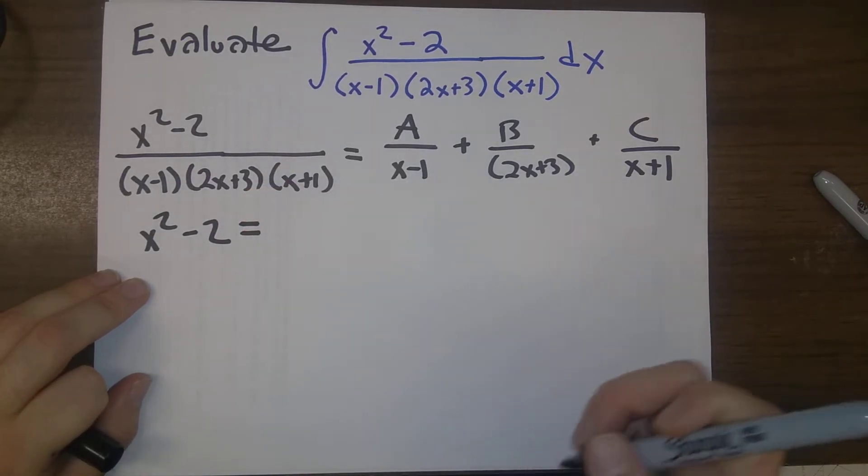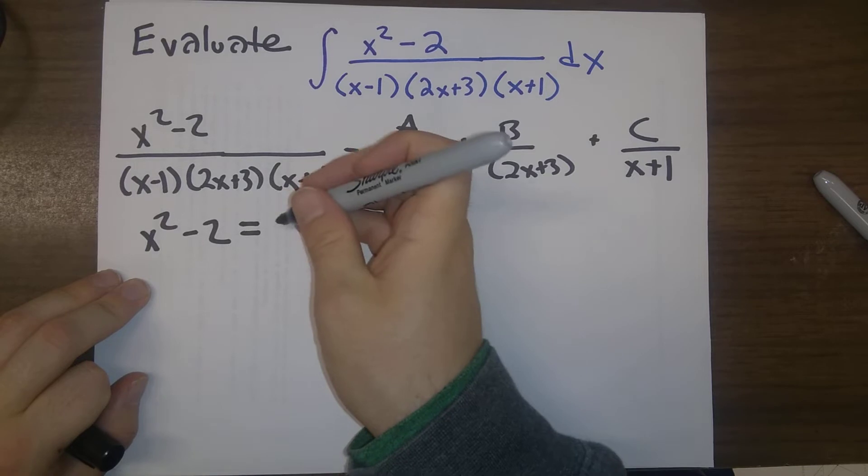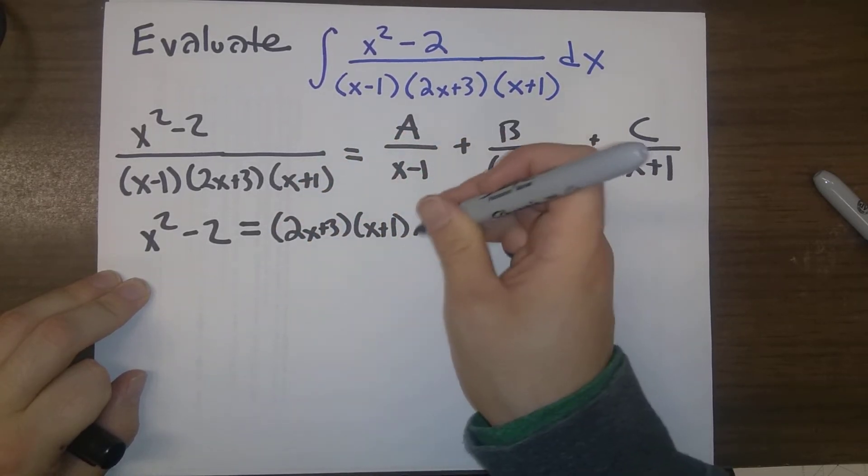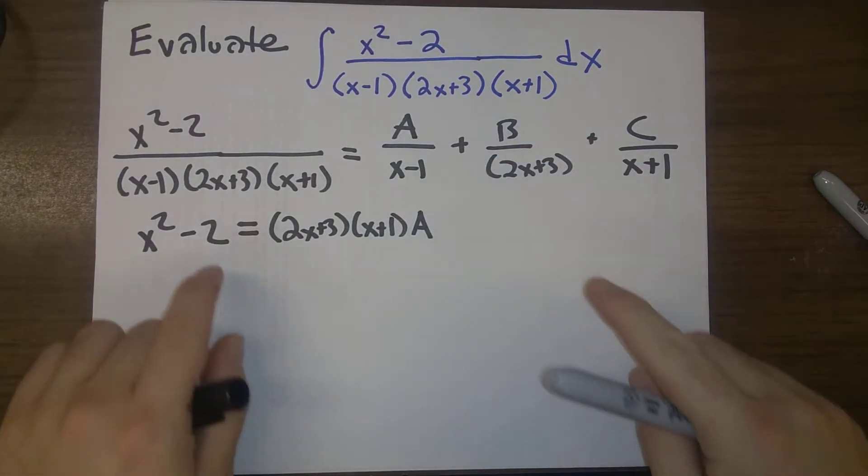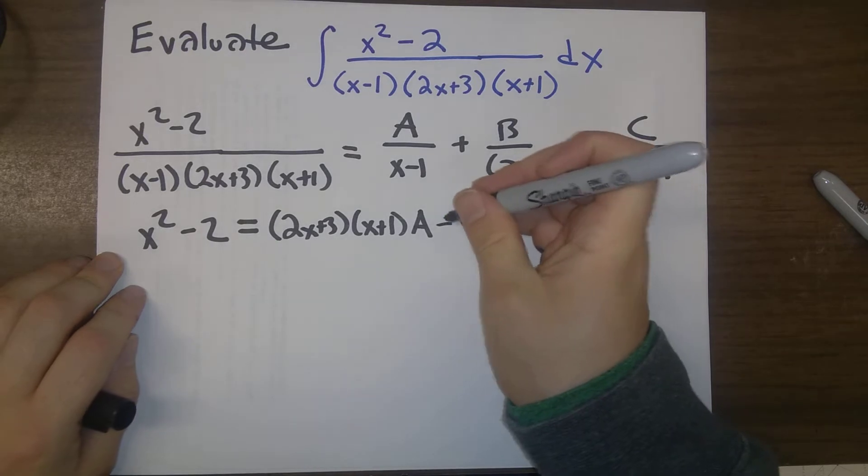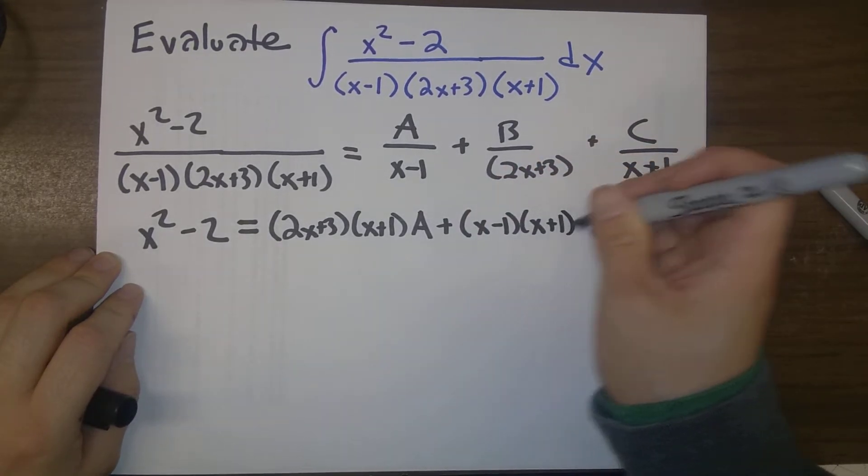And so what do we end up with? This x minus 1 will cancel that x minus 1, and we'll get 2x plus 3 times x plus 1 times A. And then this times this, the 2x plus 3s will cancel. We'll end up with x minus 1 times x plus 1 times B.